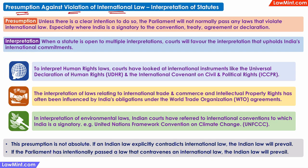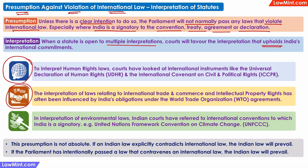The presumption against violation of international law states that unless there is a clear intention to do so, the Indian Parliament will not normally pass laws that violate international law — especially where India is a signatory to the convention, treaty, agreement, or declaration potentially being violated. While interpreting Indian law, if multiple interpretations are possible, courts will choose the option that upholds India's international commitments. Examples arise in human rights laws modeled on international human rights declarations and covenants, in commercial law and intellectual property rights where India is a signatory to several international agreements and a WTO member, and also in environmental laws where India is an active participant in international conventions and declarations.